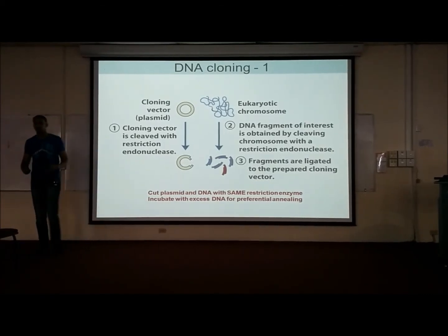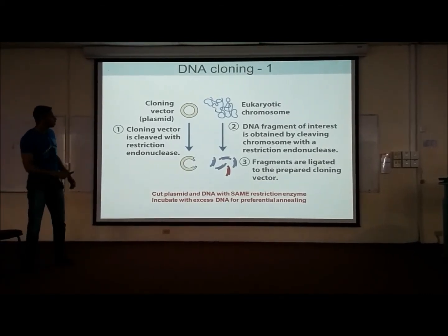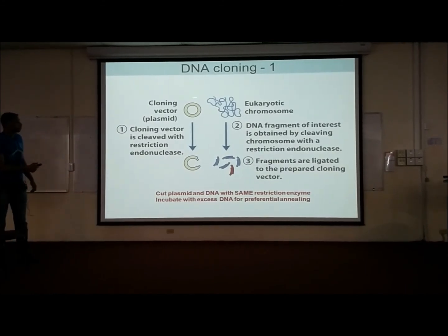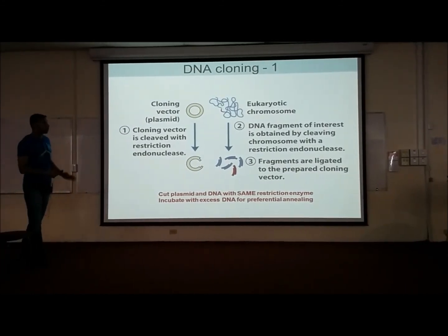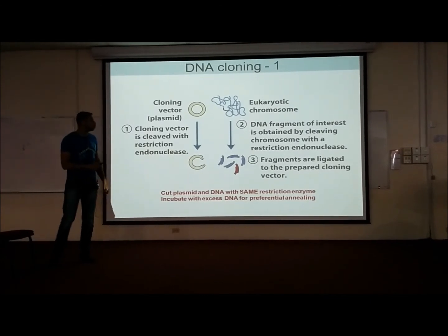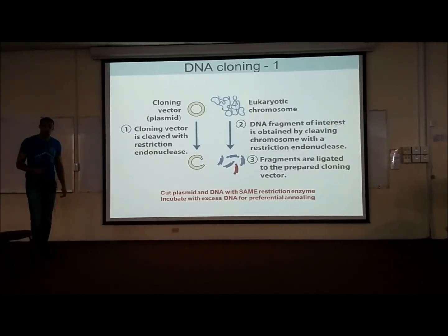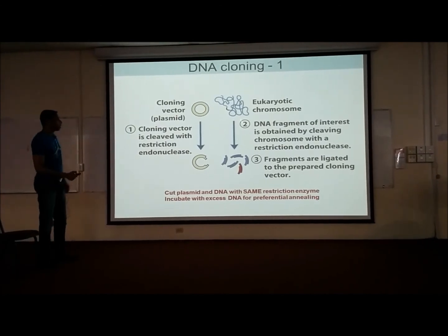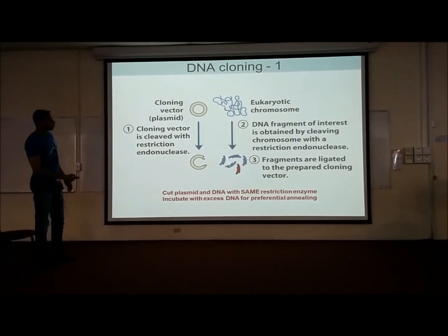This technique can feed into how to make a genomic library. So here's our eukaryotic chromosome, and here's a vector that belongs to a bacteria. Now, what do you use to cut the eukaryotic chromosome? Restriction enzyme, endonuclease, right? We cut it up into many, many different pieces.